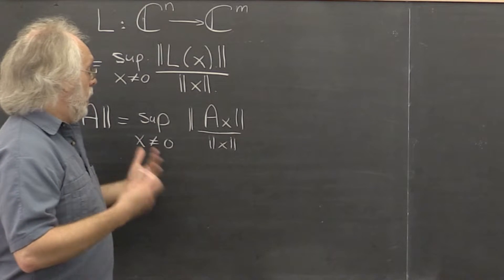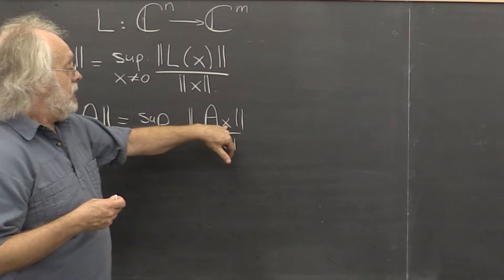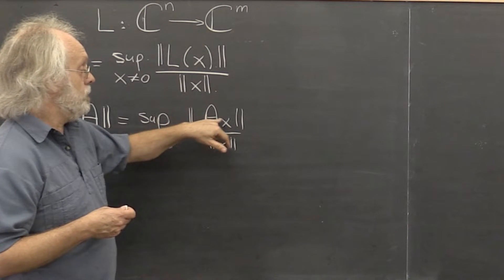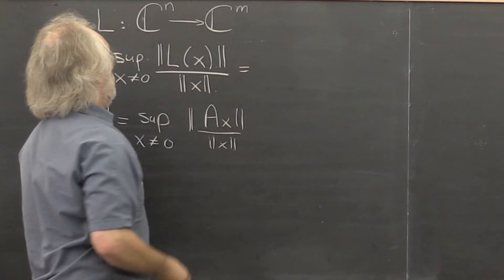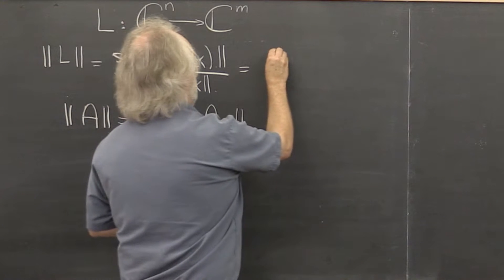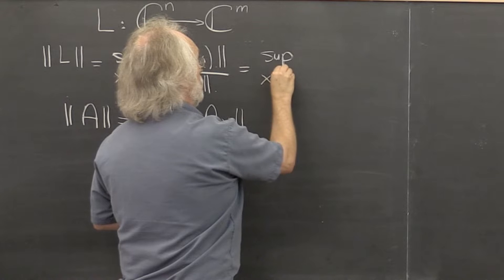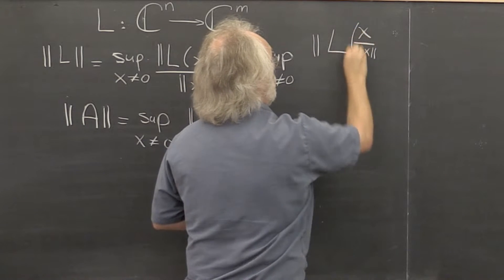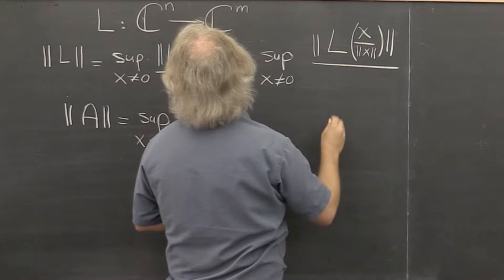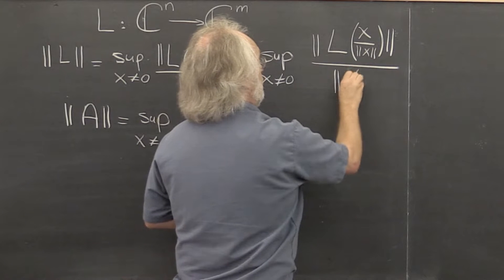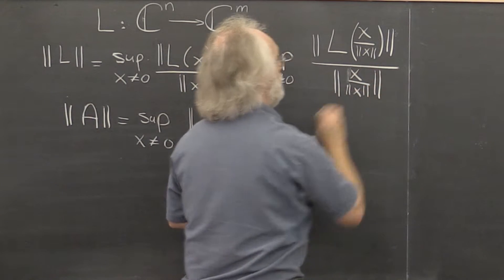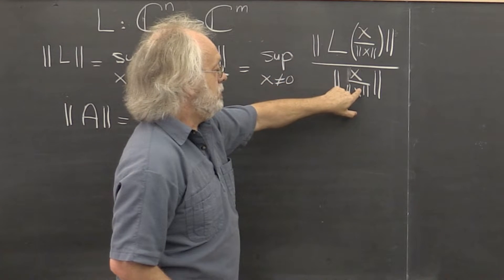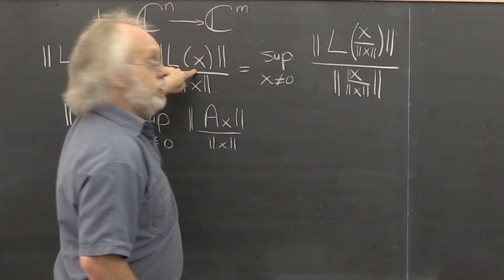Now, it actually turns out that because when you scale a vector x, you can scale it first and then transform it, or you can first transform it and then scale it, it turns out that you can say the supremum over all x not equal to zero of ||L(x)|| / ||x|| equals the supremum of ||L(x/||x||)|| / ||x/||x|||. What's happening here? Because this is a linear transformation, you could bring this outside. Because this is a norm, we could bring this outside. Those two cancel, therefore it's the same as this.